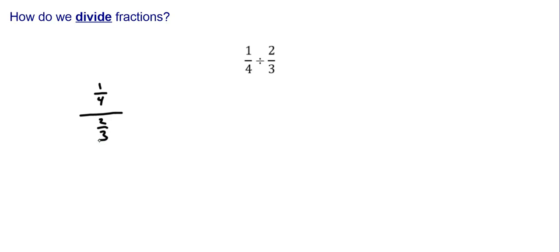I don't like big fractions where fractions are inside fractions, so what I'm going to do is get rid of the denominator. How can I get rid of the denominator? I can multiply the denominator by three and divide by two, or multiply it by the reciprocal. So two-thirds — the reciprocal, or the flip of that, is three-halves.